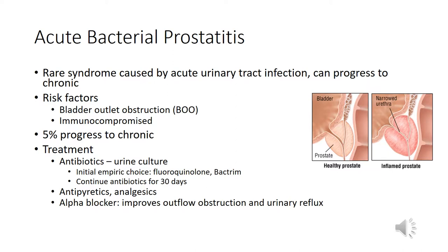Acute bacterial prostatitis is rare and caused by an acute urinary tract infection; it can progress to chronic bacterial prostatitis. These patients present with frequency, urgency, dysuria, sometimes hematuria, and perineal discomfort. Risk factors include bladder outlet obstruction from an enlarged prostate or immunocompromise. About five percent progress to chronic infection. Treatment includes a urine culture and antibiotics — usually fluoroquinolones or Bactrim empirically — given for 30 days, up to four to six weeks, so the medication can penetrate the prostate gland.